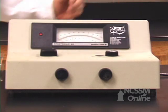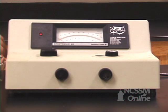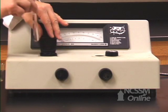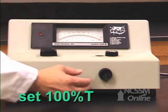We set the 0% T with nothing in the cell holder. Our blank contains 0.1 molar nitric acid. We set the 100% T with the nitric acid solution.